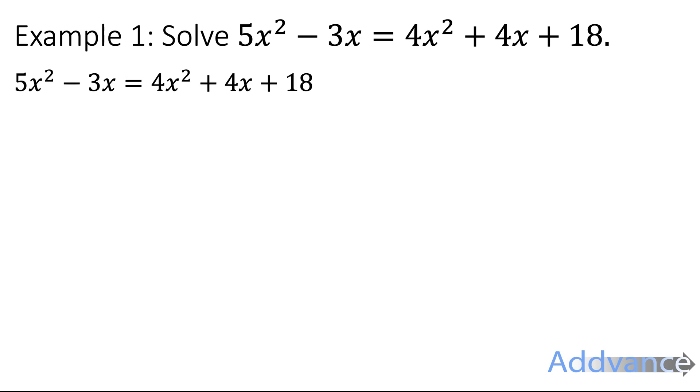We're going to start with example 1 and it says 5x² - 3x = 4x² + 4x + 18. And as you know when we're solving quadratic equations we always need to start by making them equal to zero on one side. So we're going to rearrange this to make it equal to zero.